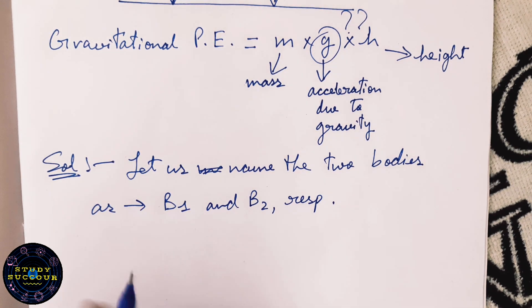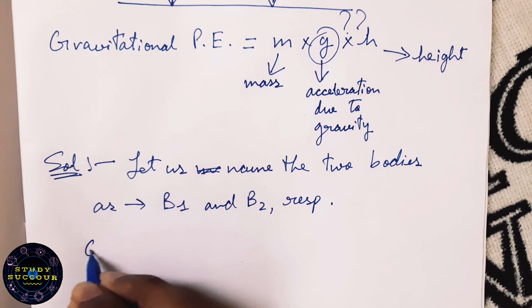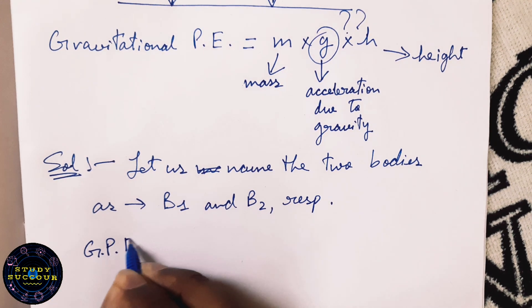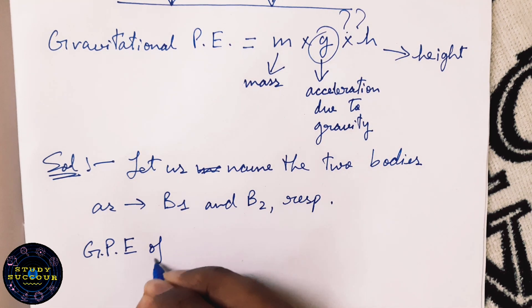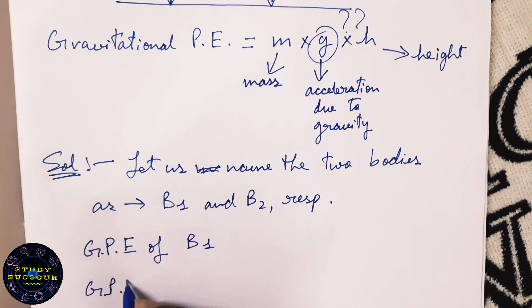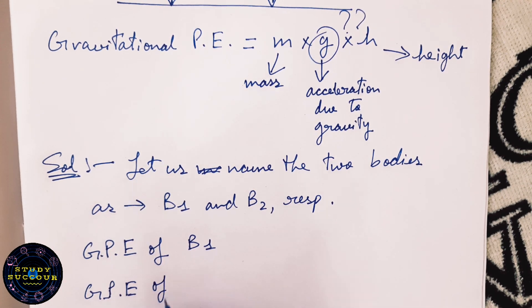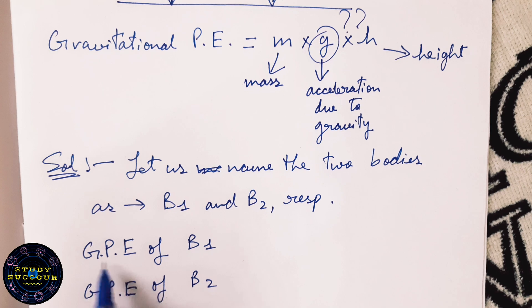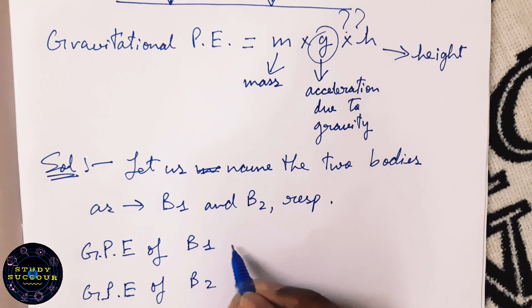Now we will have to find the gravitational potential energies of both the bodies. First, the gravitational potential energy of B1. Second, the gravitational potential energy of B2. GPE is nothing but the gravitational potential energy.